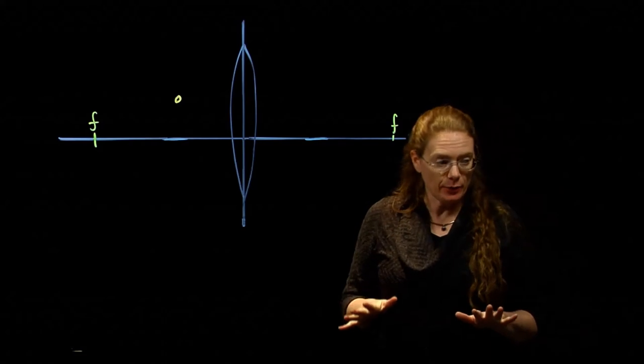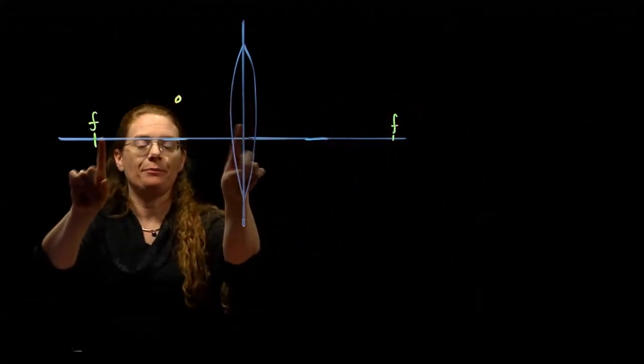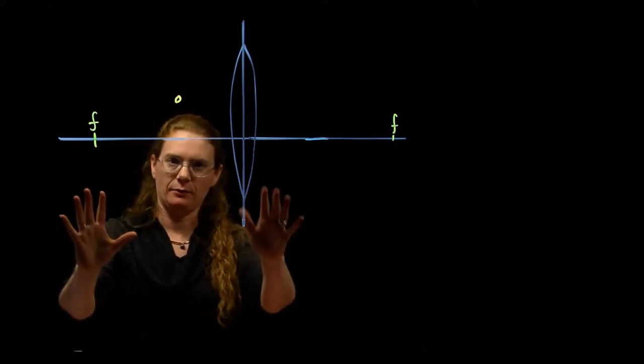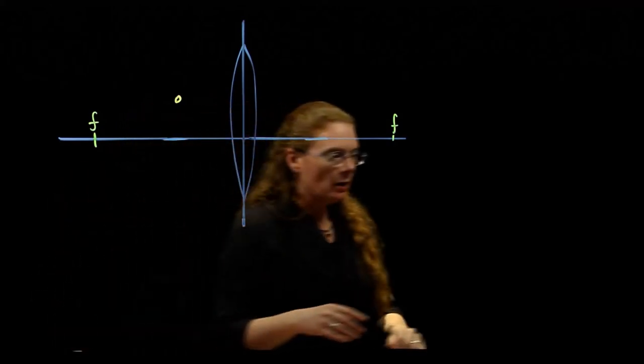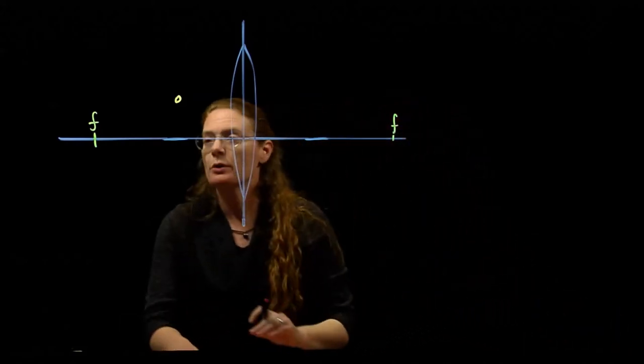And just like with mirrors, when we have an object close into the lens, closer than the focal, that's going to be your cue to say this is going to be a virtual image. We have the same three rays as before, so let's do those three rays.